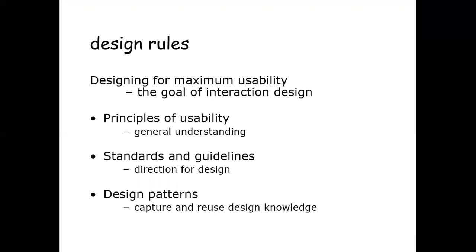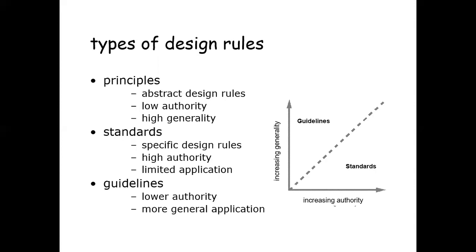Different types of design rules exist. First, principles are abstract design rules with high generality and low authority. Standards are specific design rules high in authority and limited in application. Guidelines tend to be lower in authority and more general in application. Designing for maximum usability is the goal of interaction design. The principles of usability provide general understanding, standards and guidelines help with direction for design, and design patterns capture and reuse design knowledge.